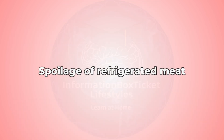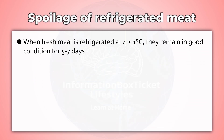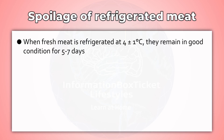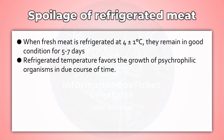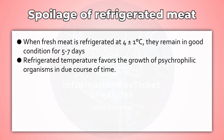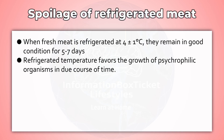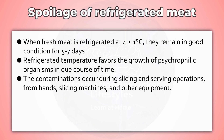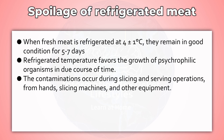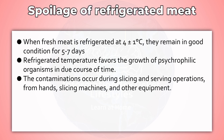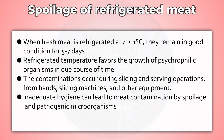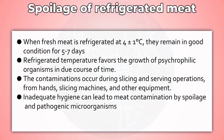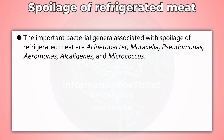Spoilage of Refrigerated Meat. When fresh meat is refrigerated at 4°C (±1°C), it remains in good condition for 5 to 7 days. Refrigerated temperature favors the growth of psychrophilic organisms over time. Contamination occurs during slicing and serving operations, from hands, slicing machines, and other equipment. Inadequate hygiene can lead to meat contamination by spoilage and pathogenic microorganisms.